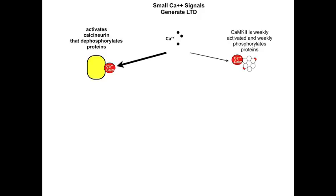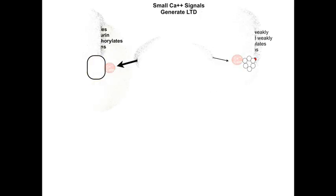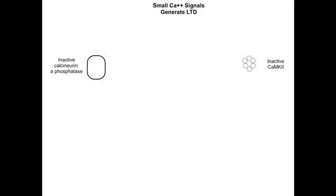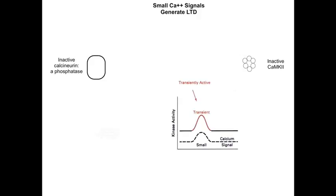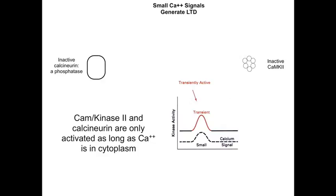As soon as the calcium levels fall, when calcium is removed from the cell, the activities of both calcineurin and CAM kinase 2 are terminated. In other words, the effects of both CAM kinase 2 and calcineurin end when calcium levels fall, as shown in the graph at the bottom.